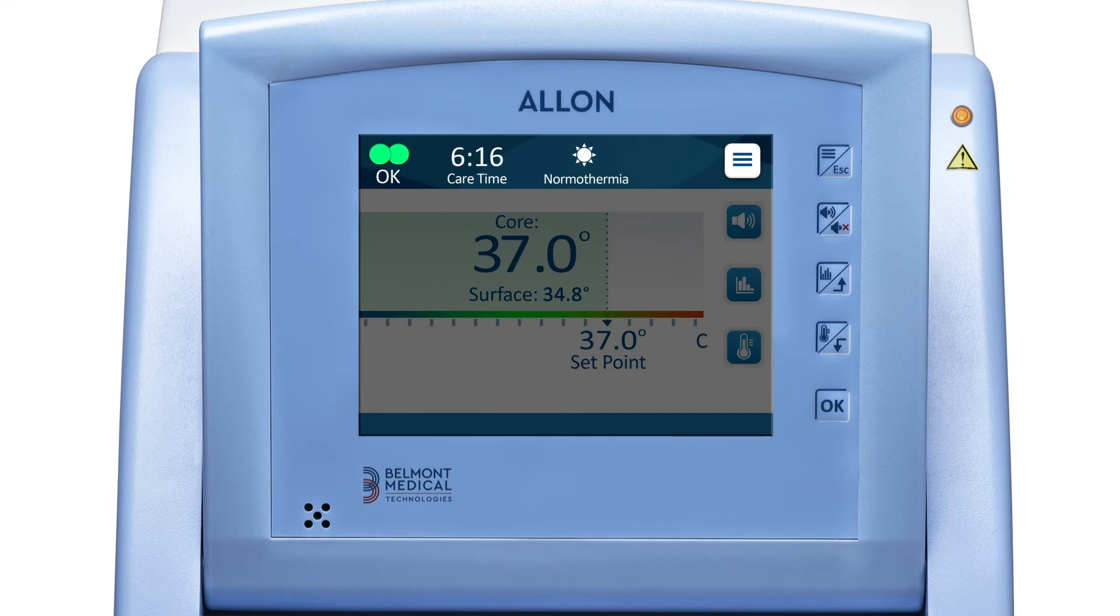At the top are the circulation icon, which shows that water is flowing through the wrap, as well as the duration of treatment, the mode of operation, and the main menu icon. Icons for the temperature graph and the set point selection appear on the right.